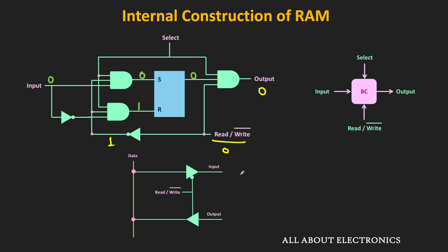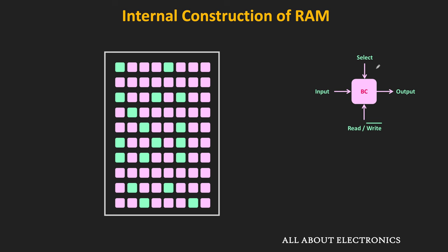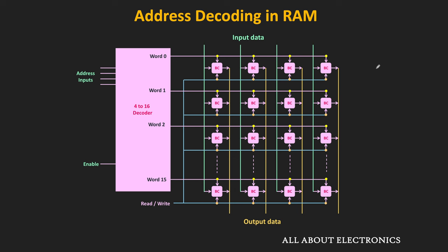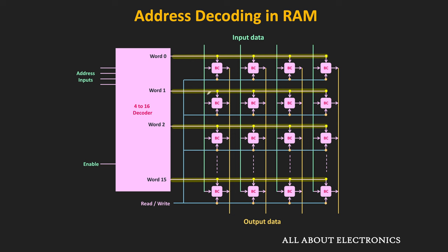In the RAM, a group of binary cells makes one word, and the RAM consists of multiple such words. Depending on the select input, a specific group of binary cells can be selected. To understand how the select input selects a specific group, let us take the example of a small 16×4 RAM — meaning 16 words each with a word length of 4 bits. With the help of a 4-to-16 decoder, we can select any one of the 16 words.